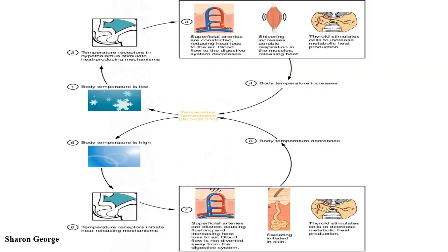See picture. This explains the heat exchange mechanism in our body. The hypothalamus in the brain is the master switch that works as a thermostat to regulate the body's core temperature.